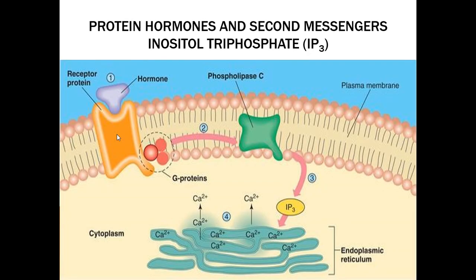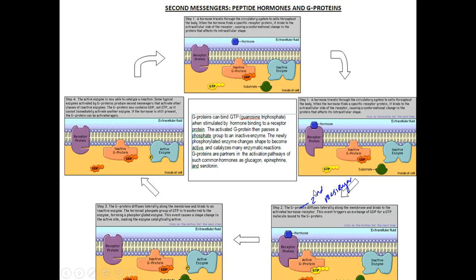Another second messenger is inositol triphosphate, or IP3 — very similar to cyclic AMP. The difference is the type of protein being activated. A hormone binds to the receptor, the receptor activates the G protein, the G protein slides over and activates a different protein called phospholipase C instead of adenylyl cyclase. This triggers the formation of inositol triphosphate. What does IP3 do? It stimulates the endoplasmic reticulum to release calcium. Lots of proteins in our cells are controlled by calcium — calcium binds as a cofactor and can trigger activity in the cell, changing the shape of enzymes and stimulating them to work.